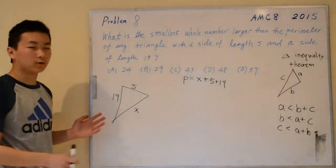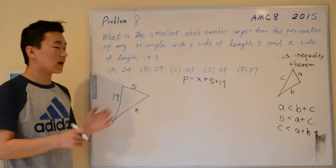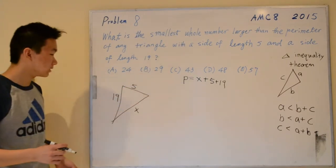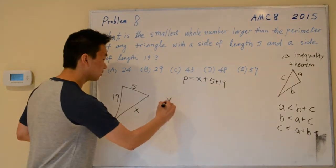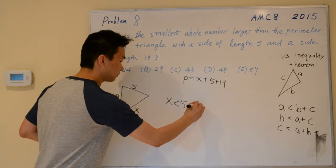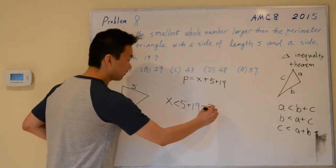For this problem, we're going to be solving it with the triangle inequality theorem, which says that any side in a triangle is less than the sum of the other two sides. In our case, x is less than the other two sides, 5 plus 19, which simplifies to 24.